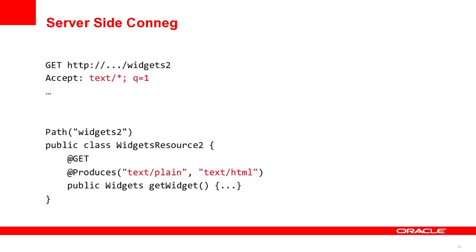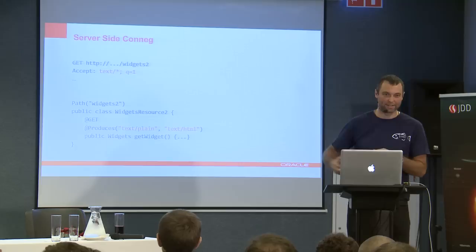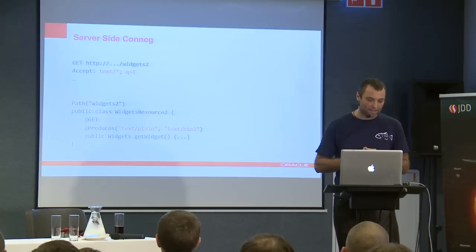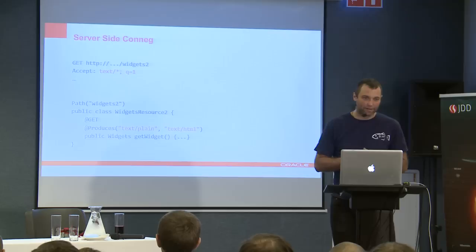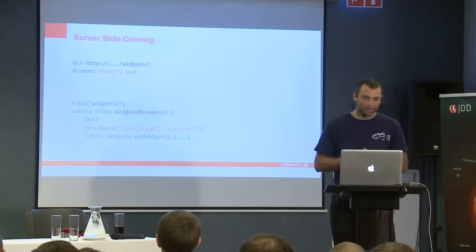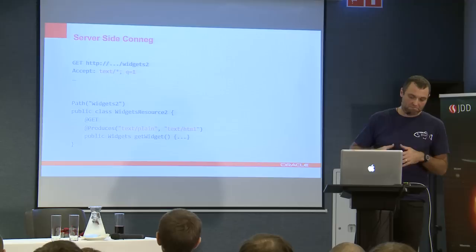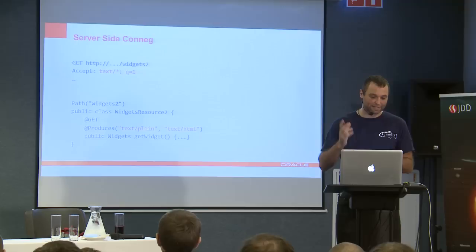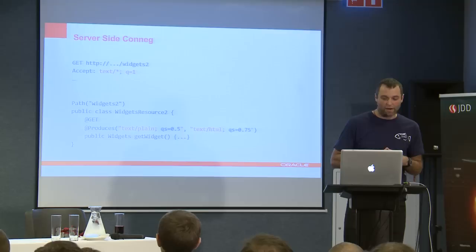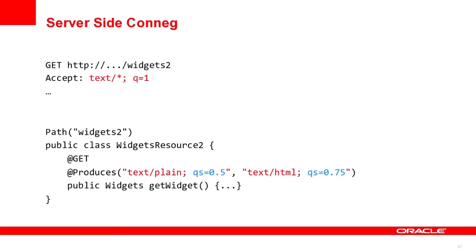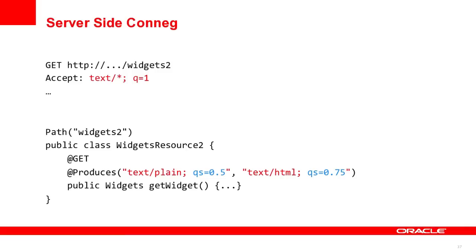The last thing I want to cover is server-side content negotiation. The idea is that with HTTP, the client dictates the server: give me XML, give me text, give me HTML. It's always the client who decides what representation will be retrieved from the server. And sometimes the client just doesn't care - the accept header has text/*, meaning the client doesn't care as long as the media type starts with text. With JAX-RS 2.0, the server now has the opportunity to say: as long as the client doesn't care, for me text/HTML is better than text/plain, so I'll provide text/HTML back. This is supported in JAX-RS 2.0.